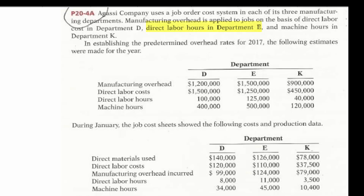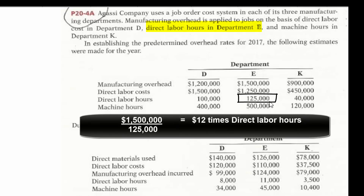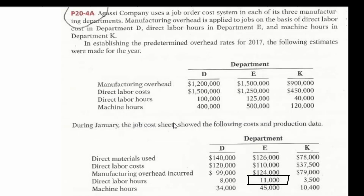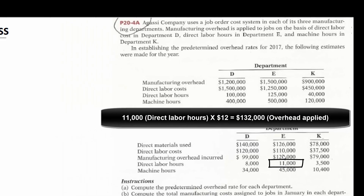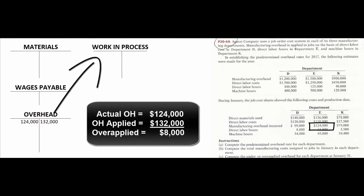Department E's workers all make about the same amount, so they use direct labor hours instead of direct labor cost. At the beginning of the year, total estimated annual overhead is $1,500,000 divided by estimated direct labor hours of 125,000, giving us $12 per direct labor hour. In January, they have 11,000 direct labor hours, multiplied by $12, giving $132,000 applied overhead.